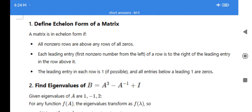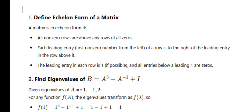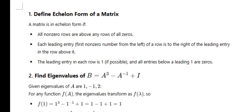The first question asks: define the echelon form of a matrix. From the matrices first unit — define the echelon form of a matrix. In a matrix, if below the diagonal elements are zero, we say the matrix is in echelon form. All non-zero rows are above any rows of all zeros; each leading entry of a row is to the right of the leading entry in the row above it; the leading entry in each row is 1 and all entries below a leading one are zeros. Simply: below the diagonal elements are zero — matrix is in echelon form.